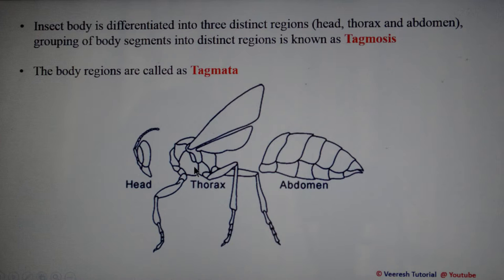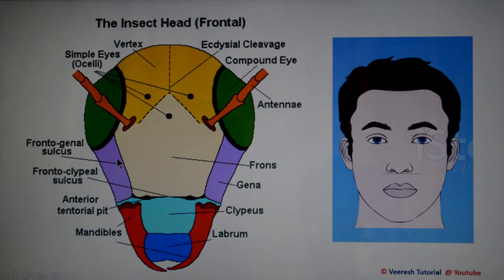Looking at the first tagma — the head — from the frontal view, the head consists of a pair of compound eyes, a pair of antennae, three simple eyes called ocelli, and mouthparts. It also consists of various head areas, sutures, and sulci.